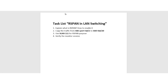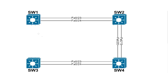I'll show you how to configure R-SPAN in LAN switching. R-SPAN stands for Remote SPAN or Remote Switch Port Analyzer. In this setup, your source and destination ports will be in different switches. In this lab, the source machine or port is in Switch 1 and the destination is in Switch 3, so I'll have to capture traffic from Switch 1 and send it to Switch 3.